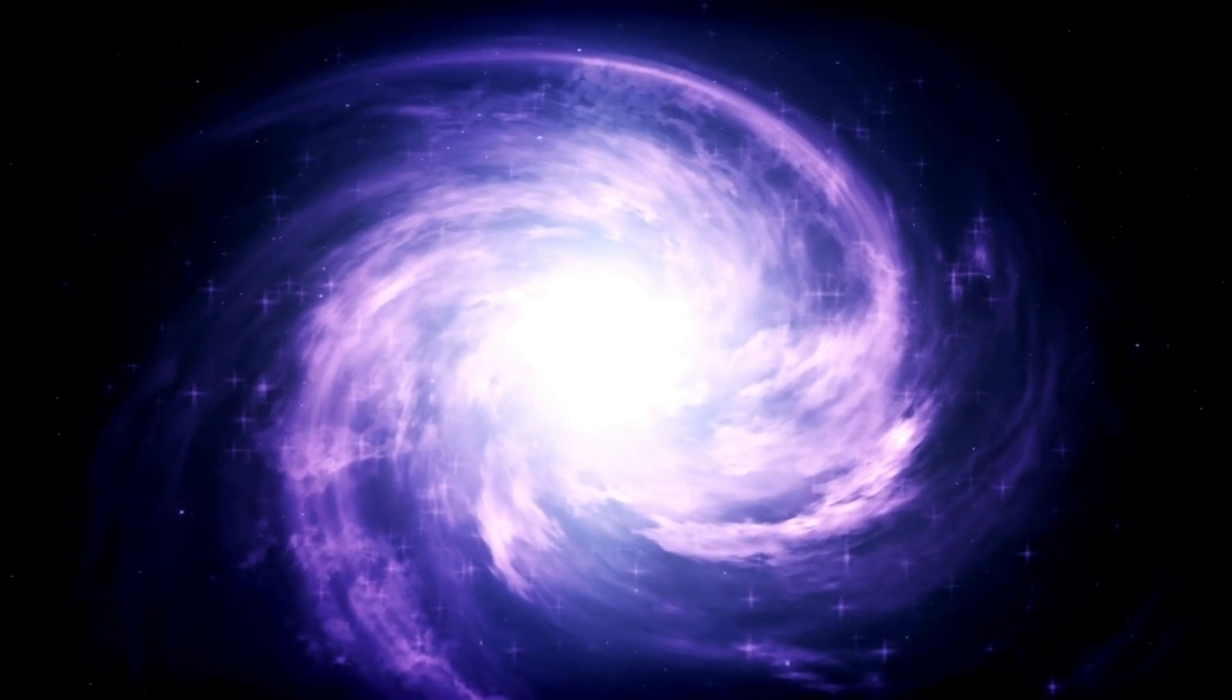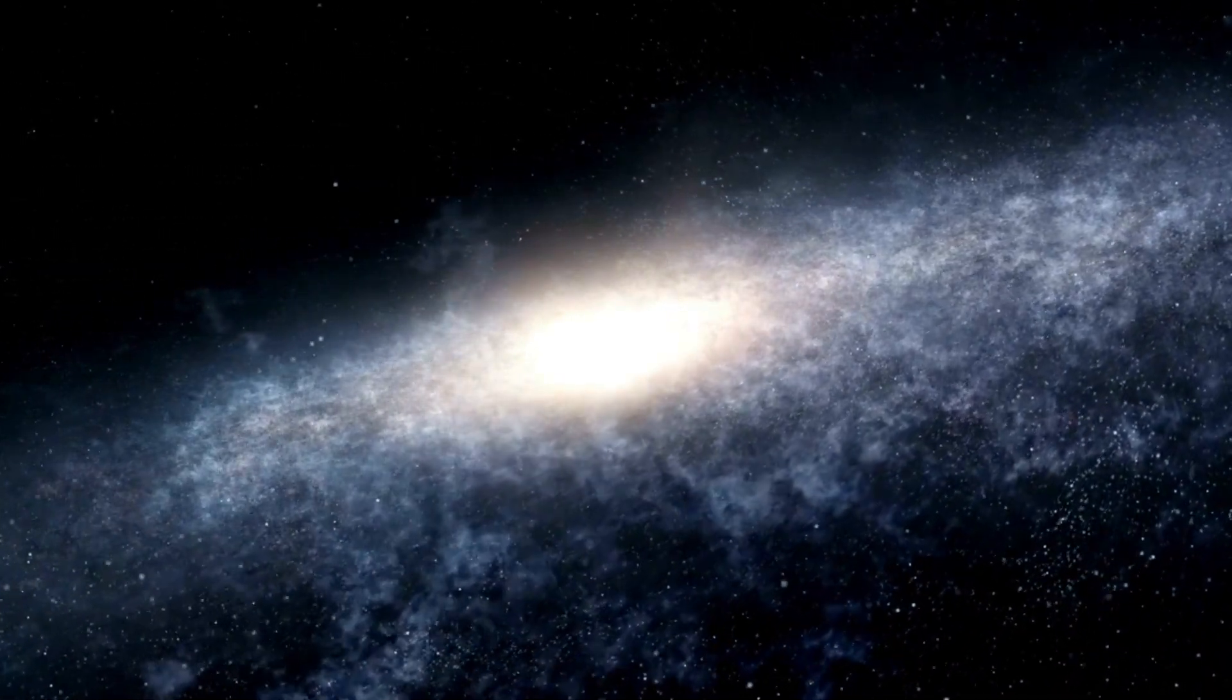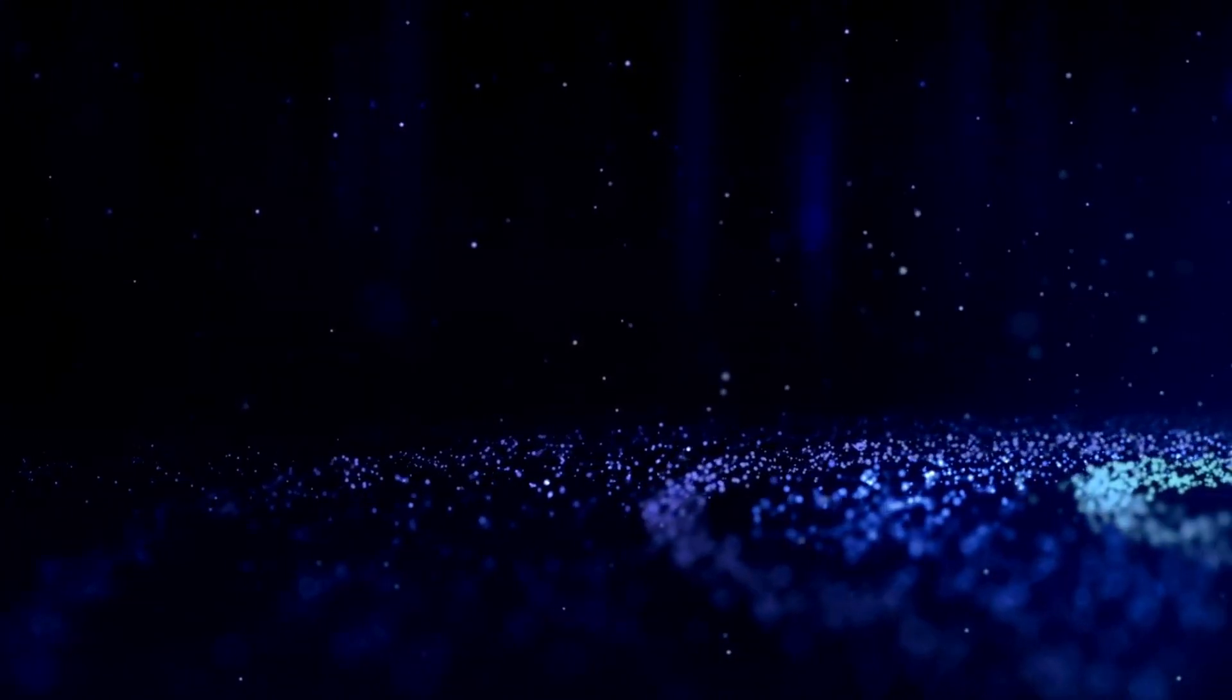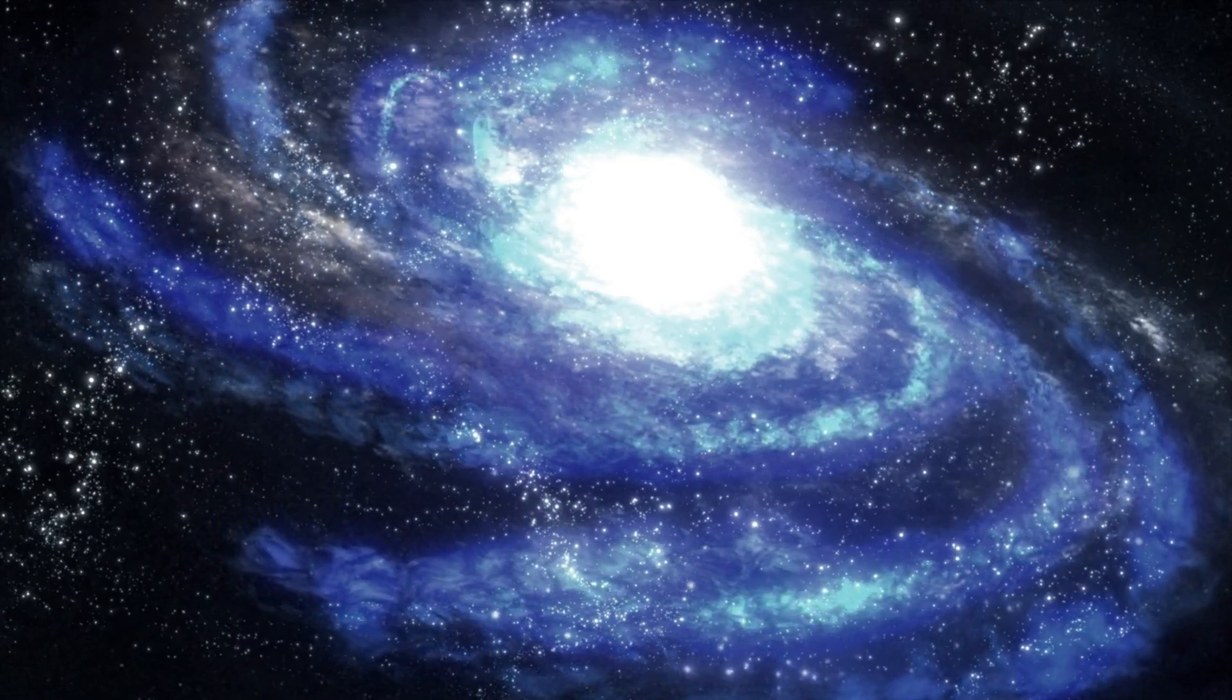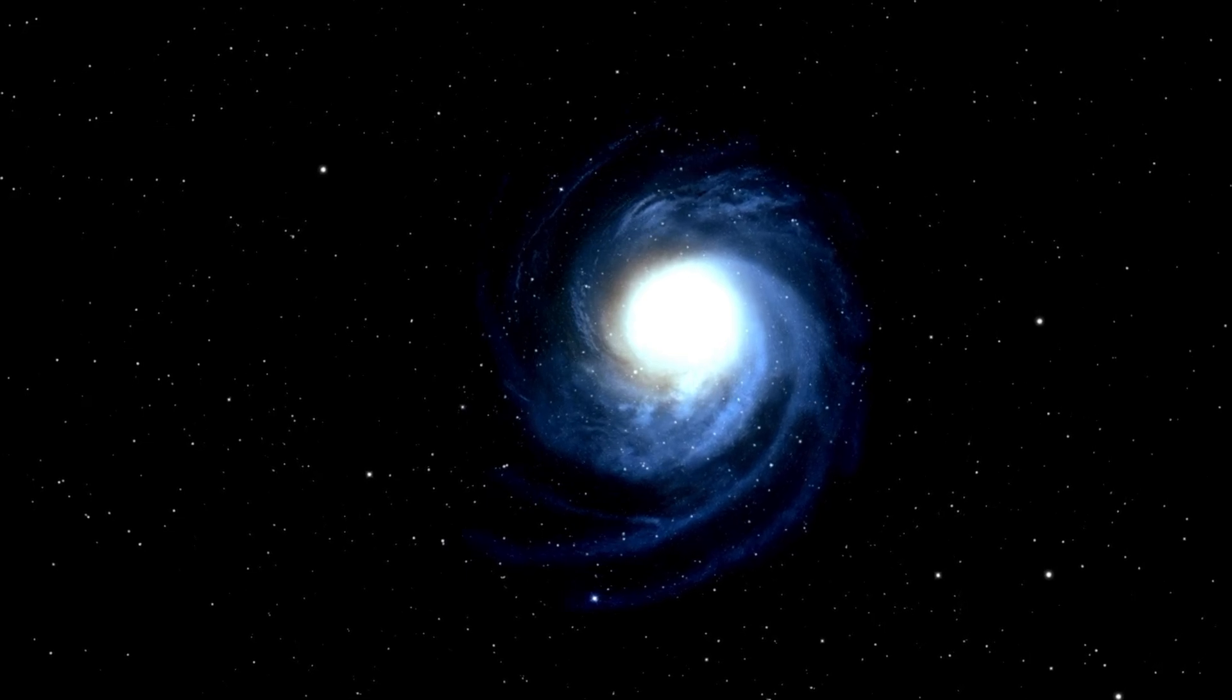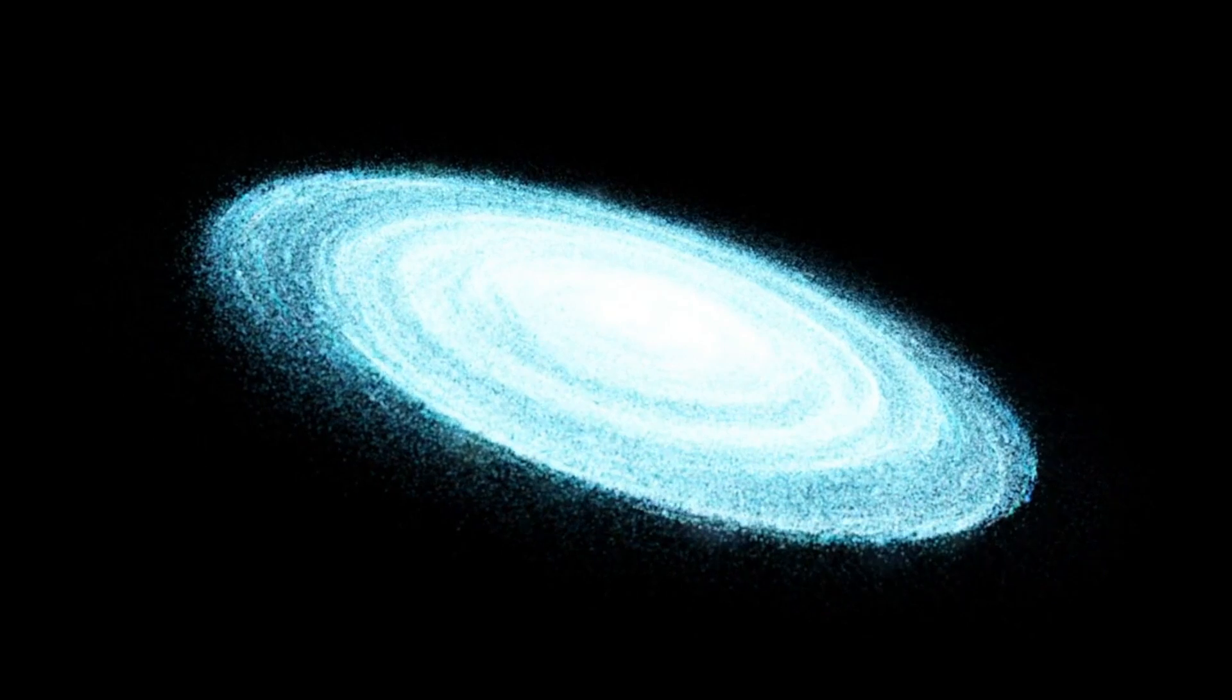The sun's magnetic field is created by the movement of electrically charged gases in its interior, resulting in a complex magnetic field that eventually reverses its polarity. The sun is primarily composed of hydrogen and helium plasma, with energy produced by nuclear fusion in the core. This energy is transported outward through the radiative zone and then by convection in the outer layers. The solar dynamo mechanism, which operates in the convective zone and the tachycline, generates the sun's magnetic field. Differential rotation of the sun, where the equator rotates faster than the poles, stretches and amplifies magnetic field lines, driving the solar cycle.